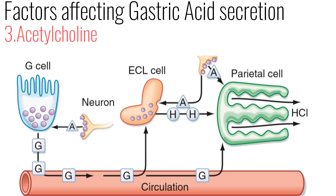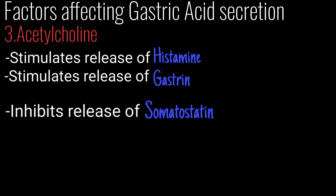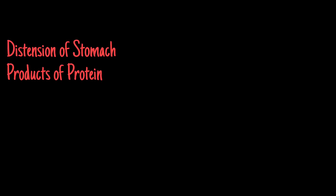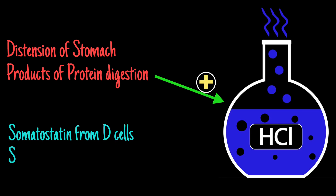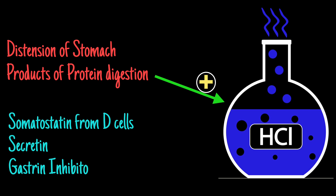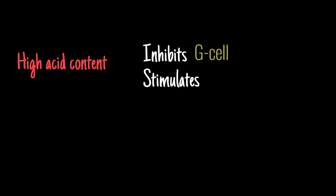Third, acetylcholine can directly stimulate release of histamine and gastrin and can inhibit release of somatostatin from D cells. The distension of the stomach and products of protein digestion stimulate acid release, while somatostatin from D cells, secretin, gastric inhibitory protein, and glucagon inhibit the release of acid. High acid content inhibits G cells and stimulates S cells for secretin release.